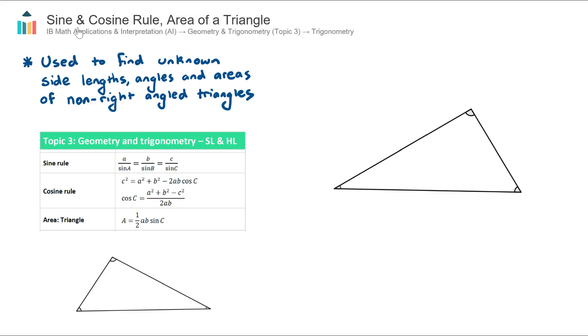In this video we look at the sine and cosine rule and area of a triangle, which are key concepts in the AI course found in Topic 3 Geometry and Trigonometry under the subtopic of Trigonometry.